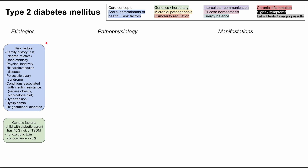Family history is the first risk factor. If you have a first-degree relative with type 2 DM, that predisposes you to developing it yourself. Race and ethnicity also play a role — this is a social determinant of health. In the United States, Native Americans and African Americans have higher rates of type 2 diabetes. Physical inactivity or a sedentary lifestyle also predisposes to diabetes. History of cardiovascular disease, such as heart attacks, stents, or a CABG procedure, also predisposes you to type 2 diabetes. Polycystic ovarian syndrome is associated with type 2 DM, and insulin resistance is thought to play a role in PCOS pathophysiology as well.